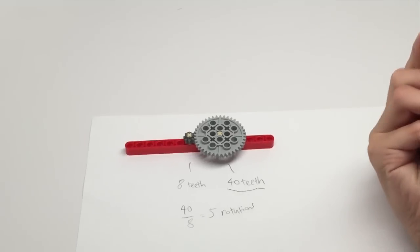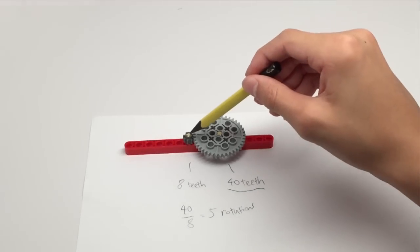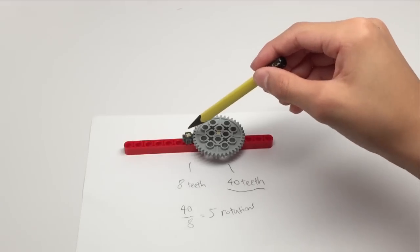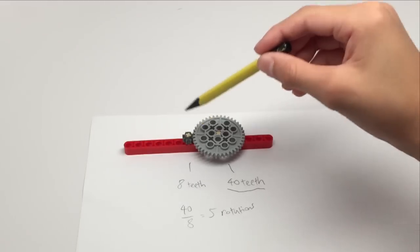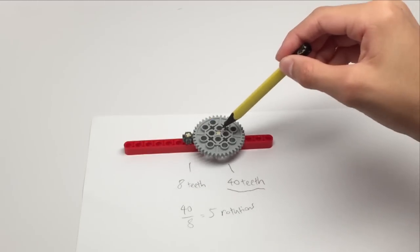Because 40 divided by 8 is equal to 5 rotations. This means if your power source is starting from the smaller gear, then it will slow down by 5 times once the power source comes out here.